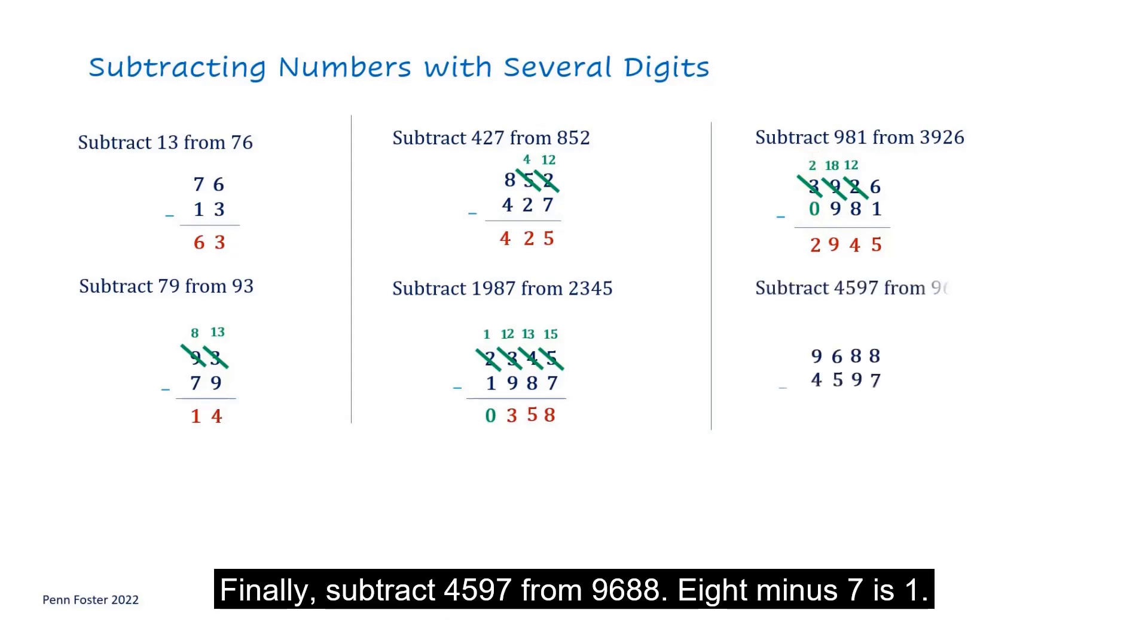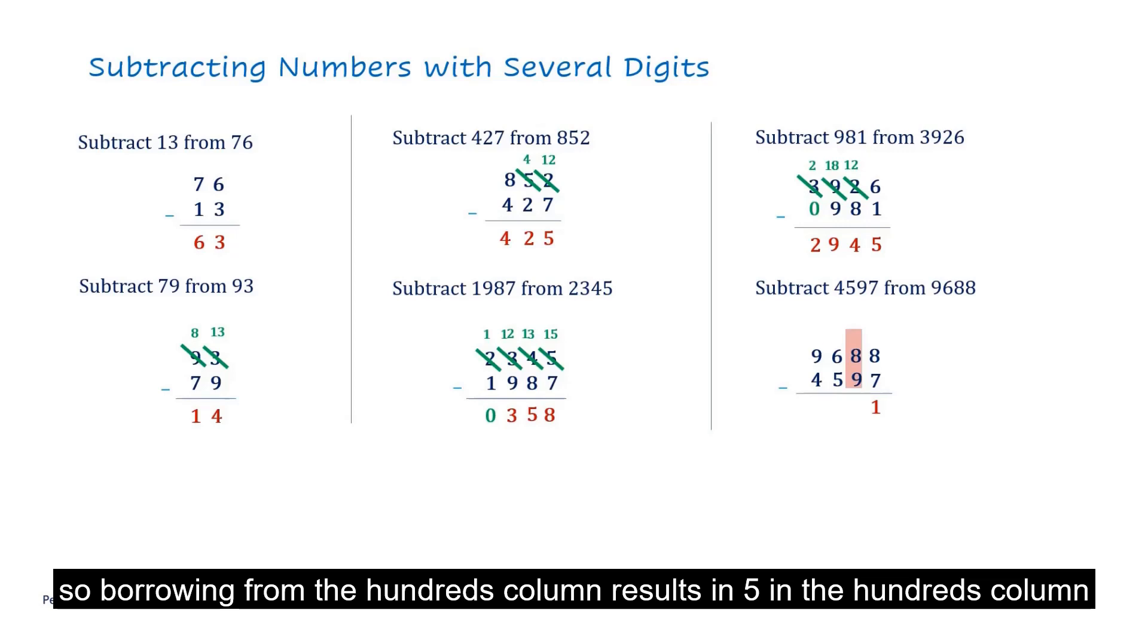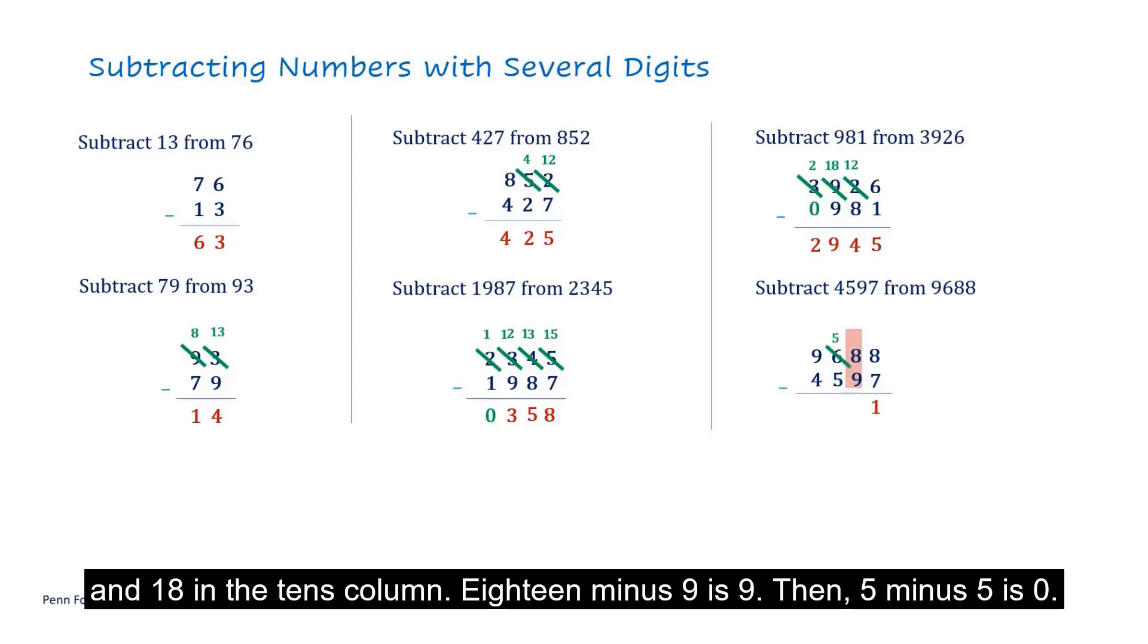Finally, subtract 4,597 from 9,688. 8 minus 7 is 1. 8 minus 9 is not possible. So, borrowing from the 100's column results in 5 in the 100's column and 18 in the 10's column. 18 minus 9 is 9.